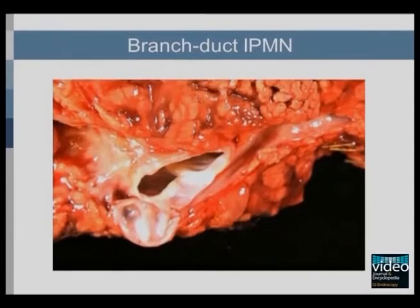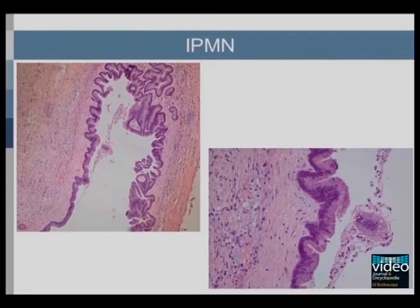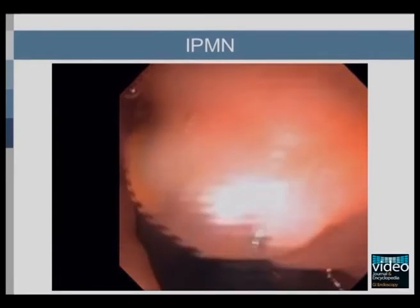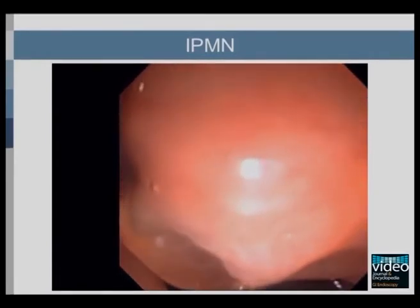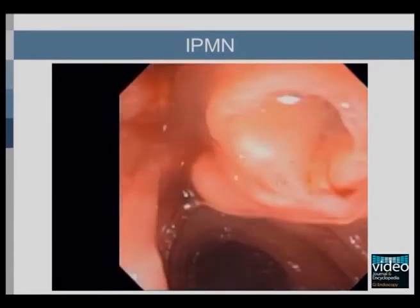On the resected specimen, the branch duct is cystically dilated. The lesions form multicystic, grape-like structures. Microscopically, IPMNs show intraductal proliferation of columnar mucin-producing cells. The epithelium can be flat or papillary. In some cases of IPMNs, duodenoscopy may reveal a patulous duodenal papilla and mucin extrusion through the orifice.